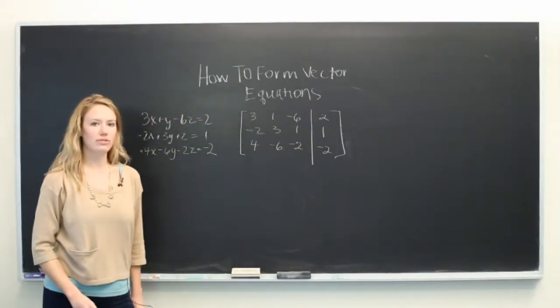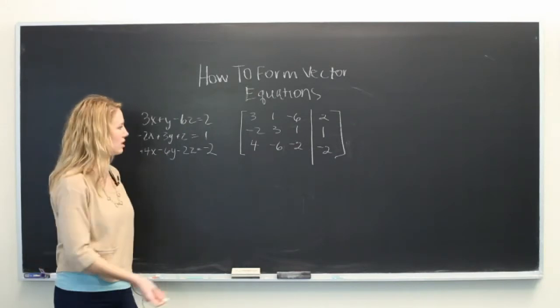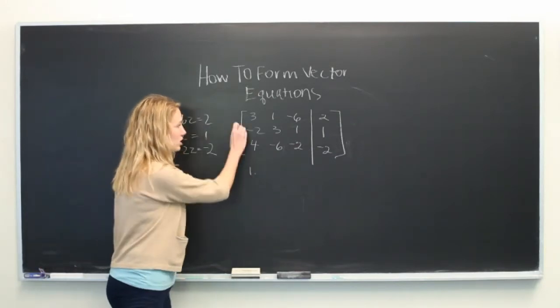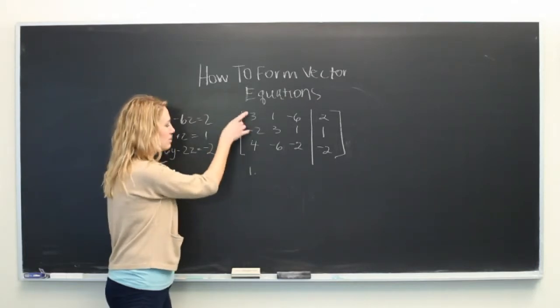Now in order to solve for x, y, and z, we need to do row operations. And there are three types of these. The first is to just switch two rows to make the first row become the second, and the second become the first.